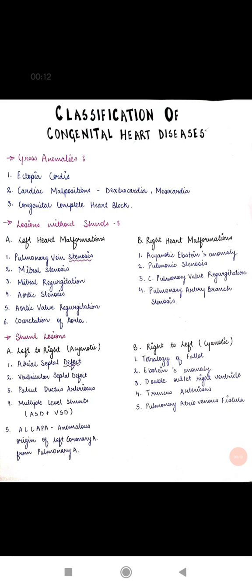Tetralogy of Fallot is a congenital heart disease. Before discussing it, let's first see the classification of congenital heart disease. Congenital means a disease which is present since birth. The classification includes three parts: gross anomalies, lesions without shunt, and lesions with shunt.